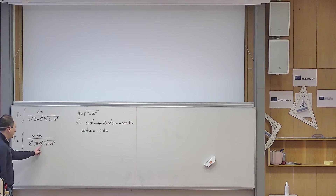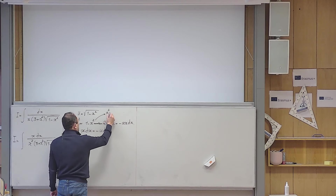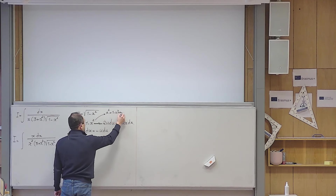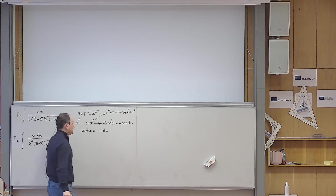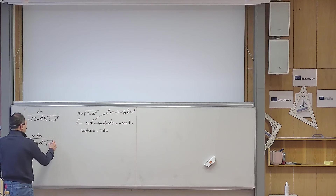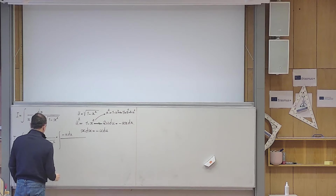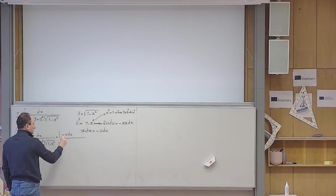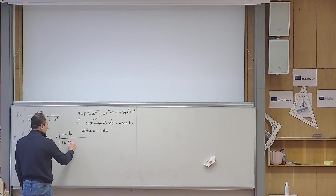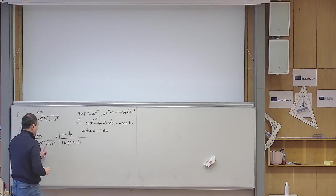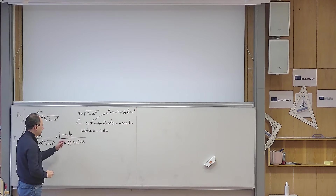Now everything is ready to do the substitution. Here I need x squared, so from u squared equals 1 minus x squared I calculate x squared equals 1 minus u squared. This means 3 plus x squared equals 4 minus u squared. Now I plug everything in: instead of x dx I put minus u du, instead of x squared I write 1 minus u squared, instead of 3 plus x squared I write 4 minus u squared, and instead of square root of 1 minus x squared I simply put u. Then this u and that u cancel.